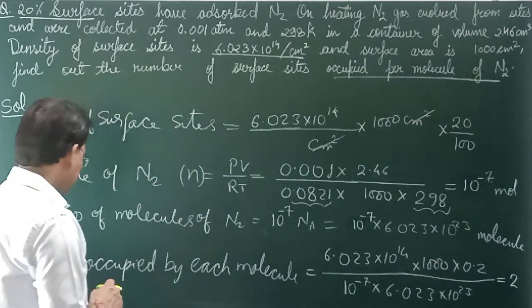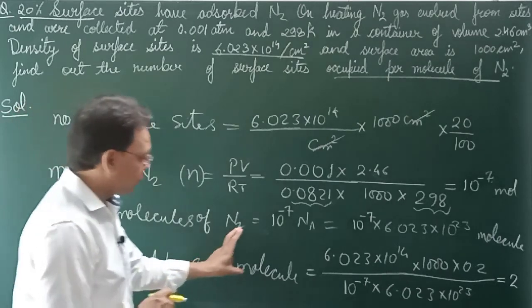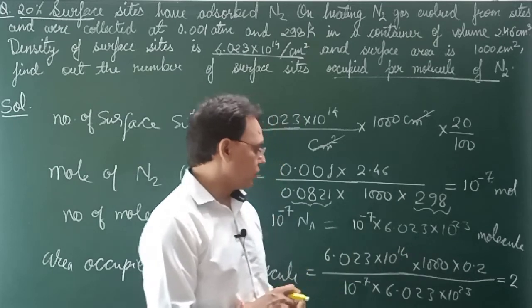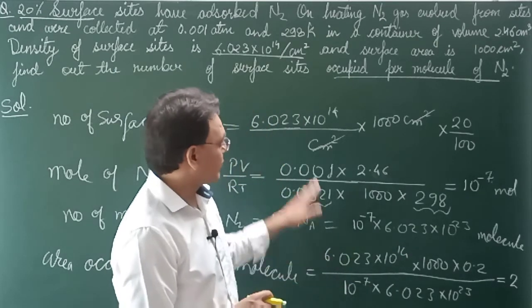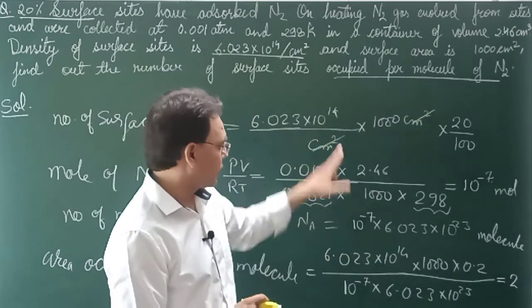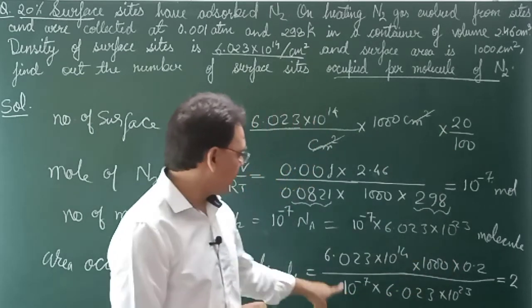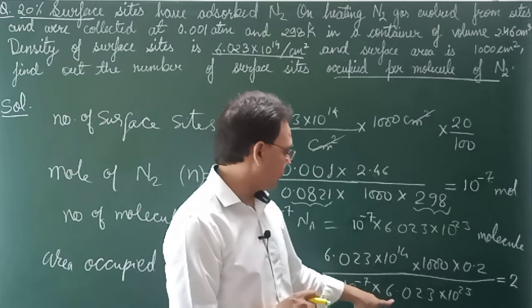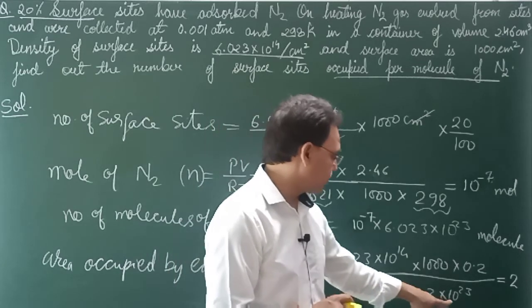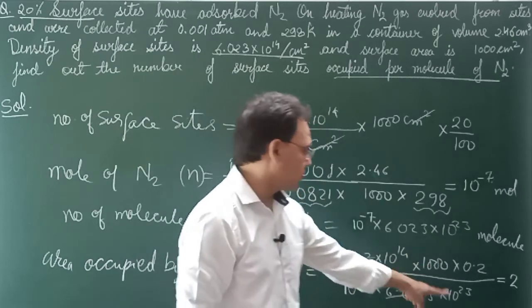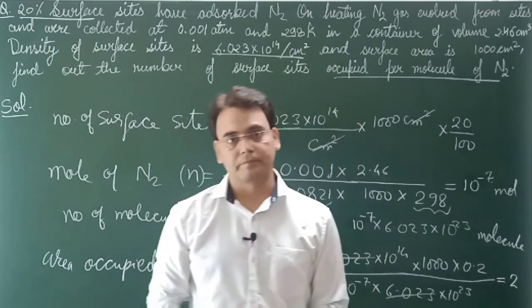Now I said the same thing - area occupied by each molecule is total surface sites occupied divided by total number of molecules. So total surface sites you calculated there: 6.023×10¹⁴ times 1000 times 0.2, divided by this data: 10⁻⁷ times 6.023×10²³. You see, this cancels out. And easily solving, the value we get is 2.